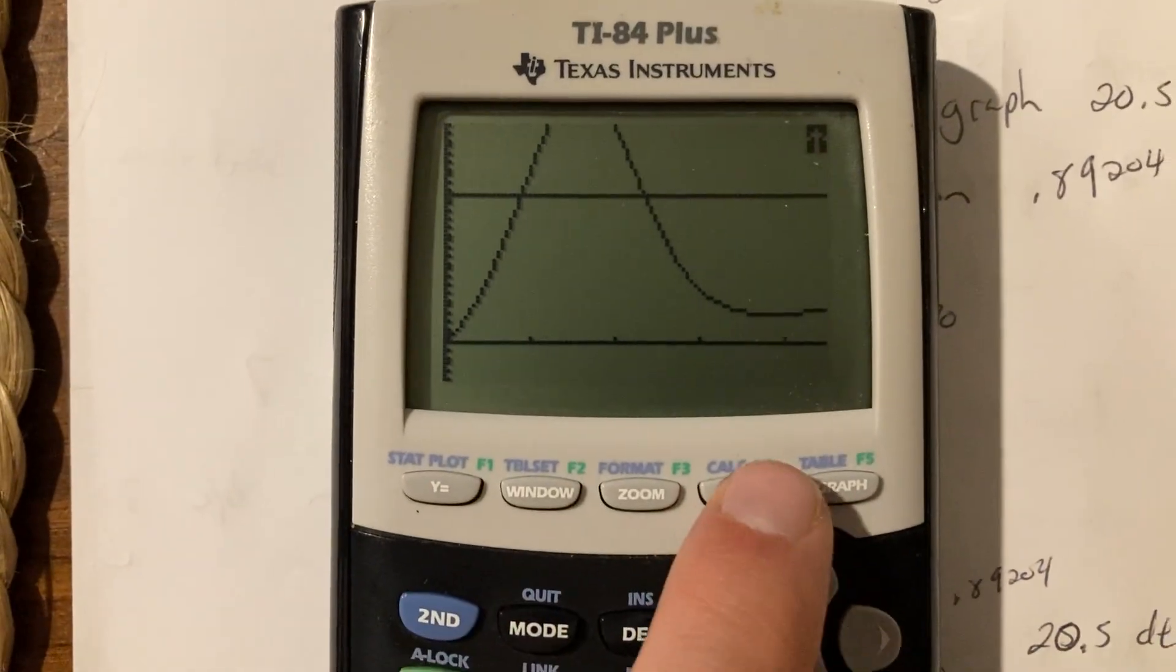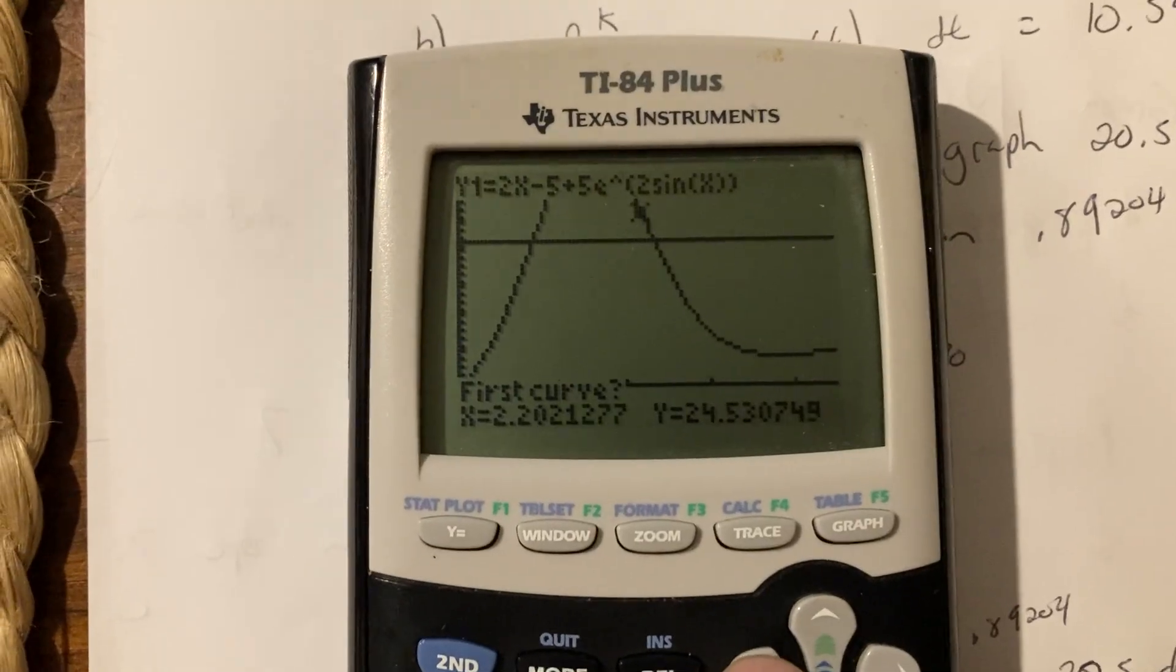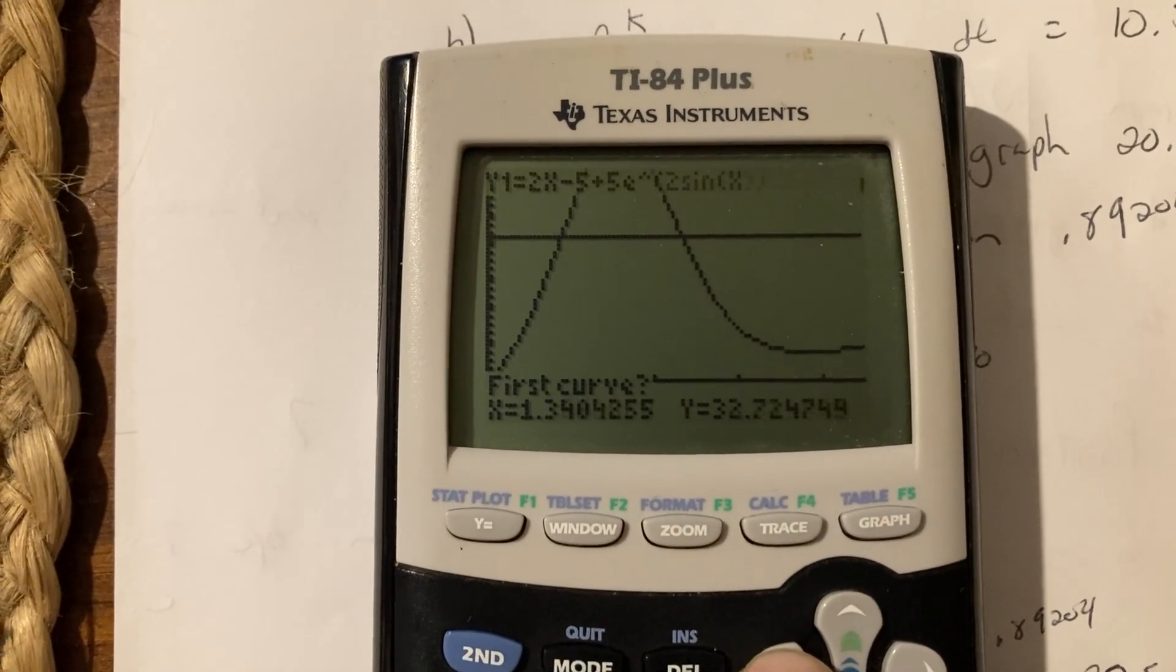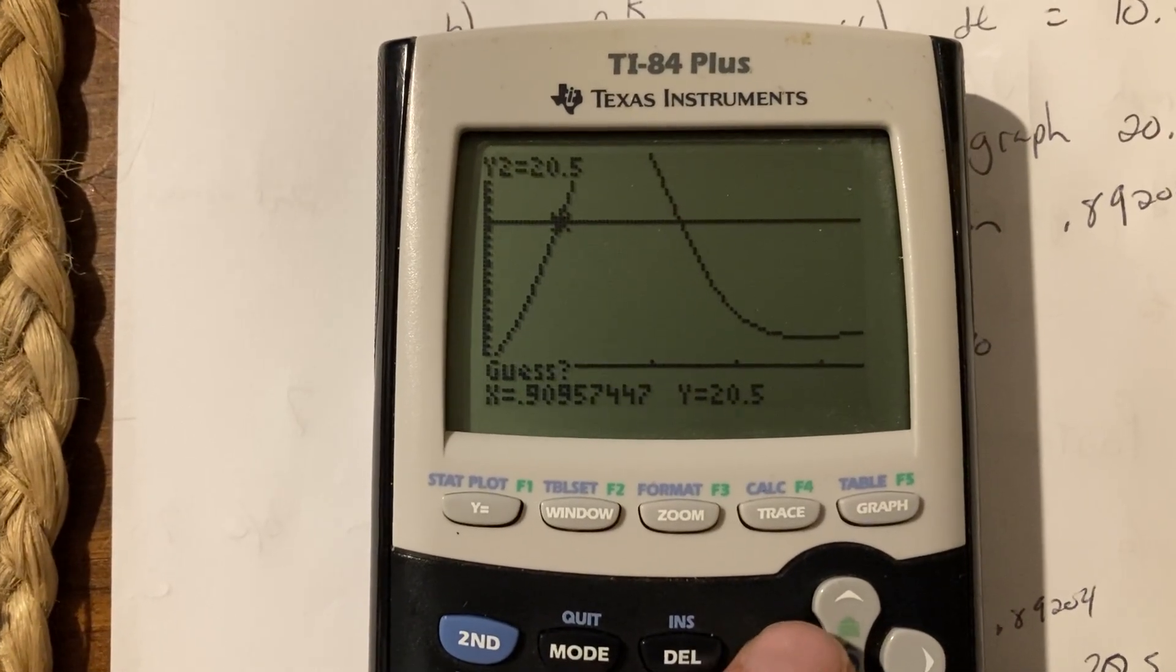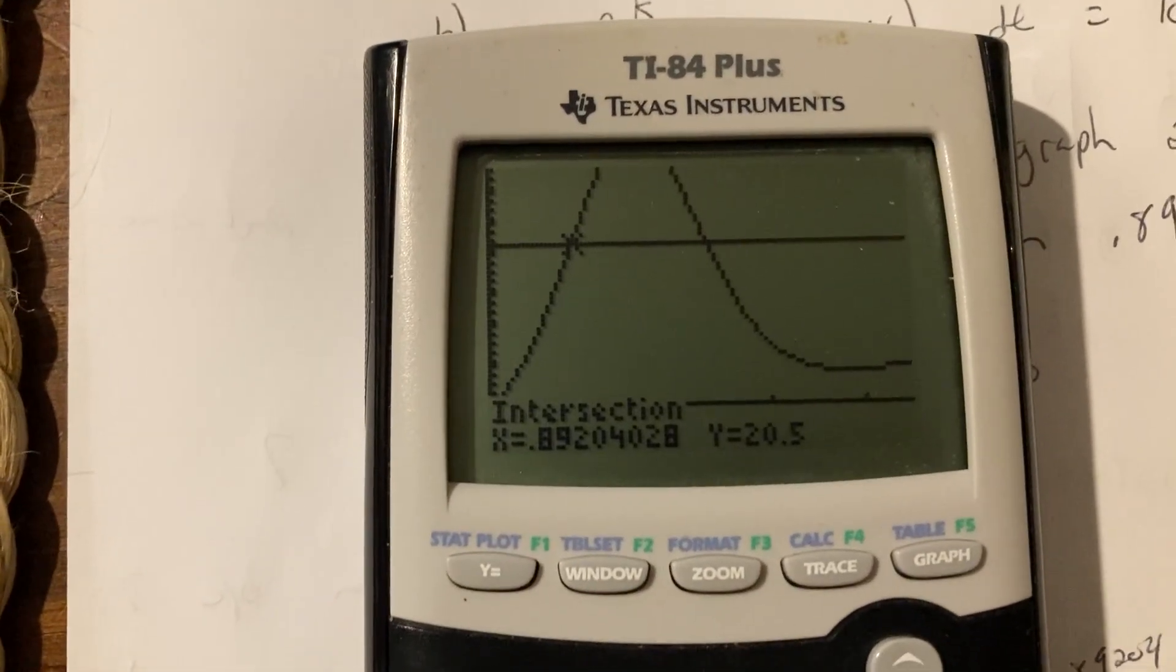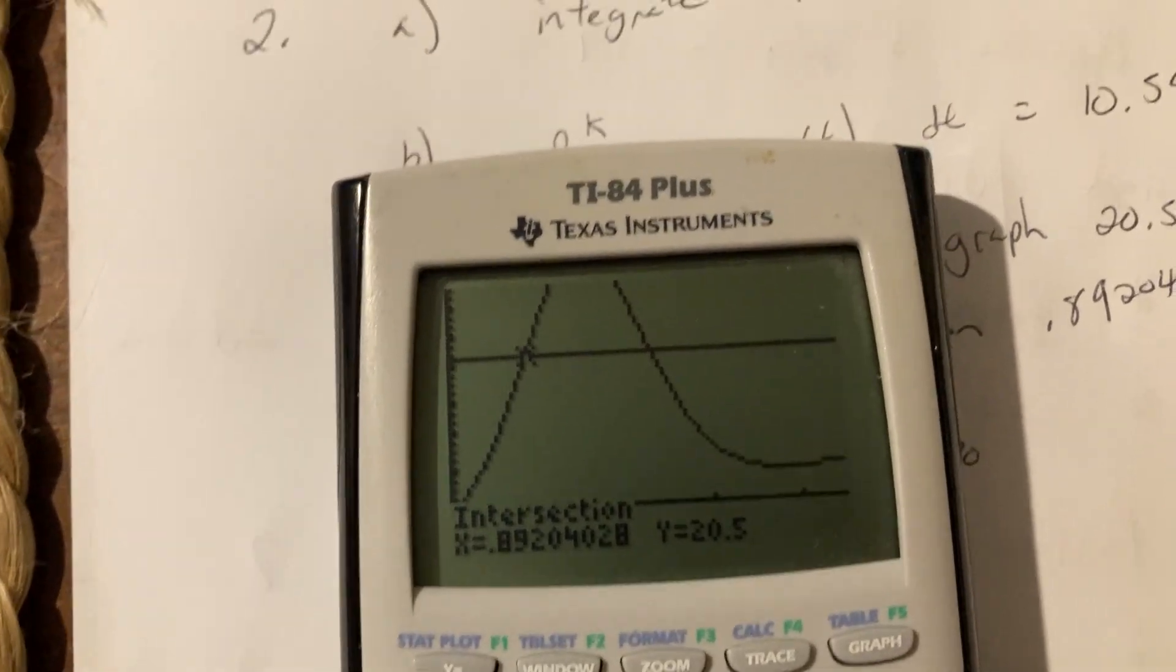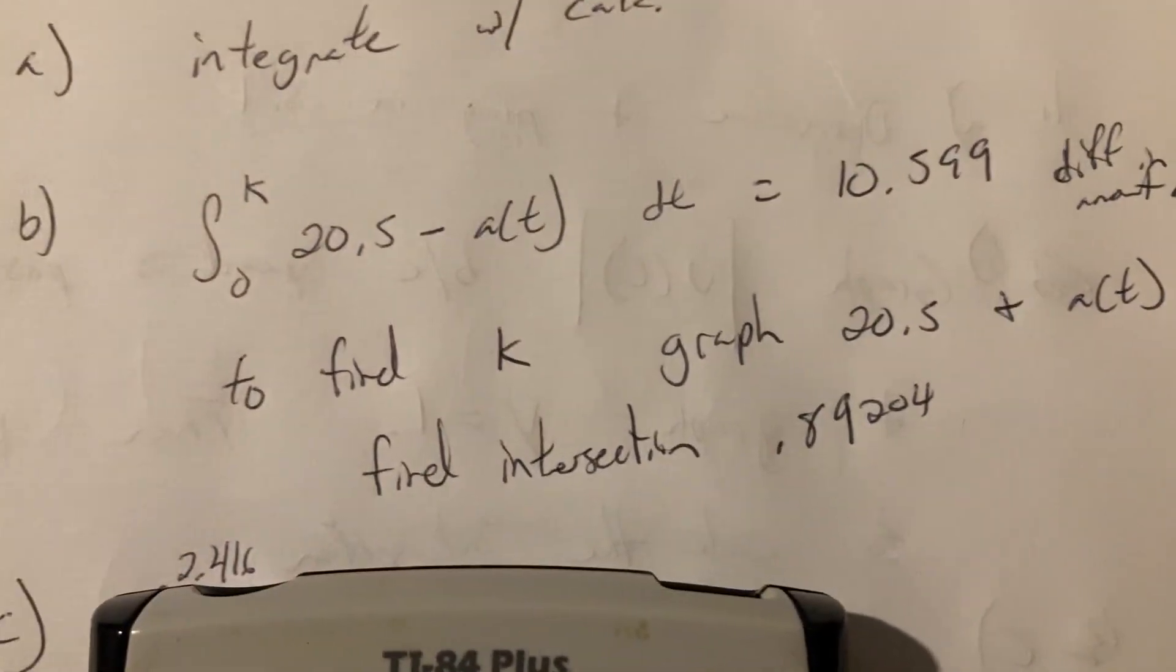So now to find that intersection, second calculate, number 5, and we gotta get that cursor closer to our first intersection. There it is. Boom, boom, enter, enter, enter. 0.89204. All right, so that's our K. So that's what I wrote down right there.